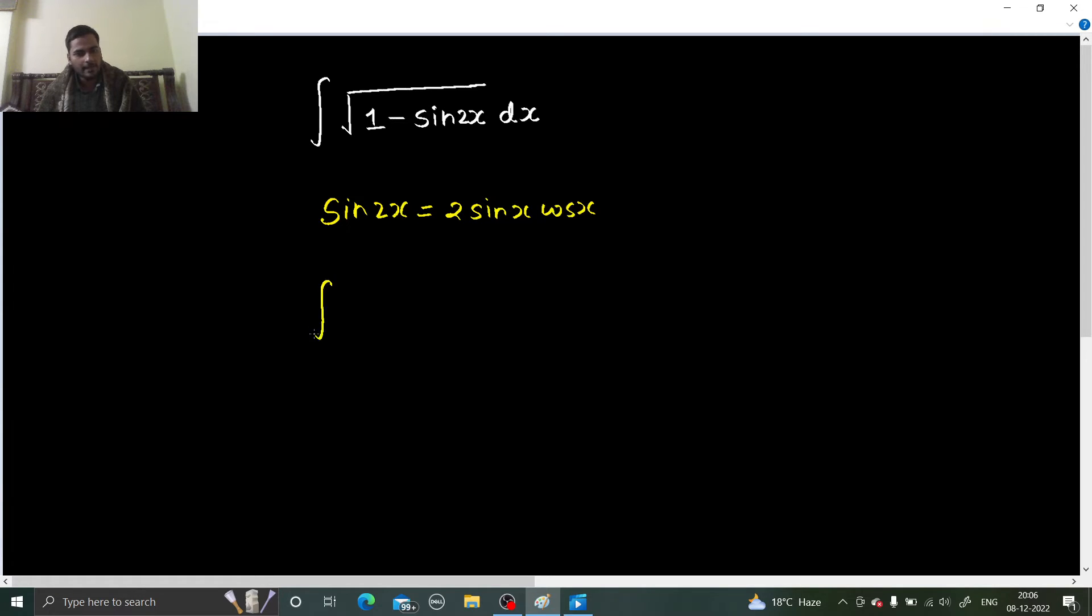So if you plug in this value in this root, 1 minus 2 sine x cos x, you will realize can we make a perfect square out of this. But for that, we need a sine term and a cos term with square, but that is very easy because we already know sine square x plus cos square x is 1.